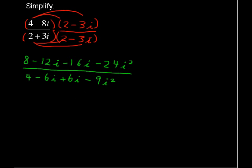This i squared—if i equals the square root of negative 1, then i squared equals negative 1. So each of these i squareds is really negative 1. Negative 24 times negative 1 is going to be positive 24 and negative 9 times negative 1 will be positive 9.